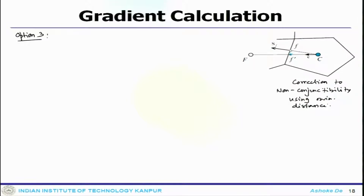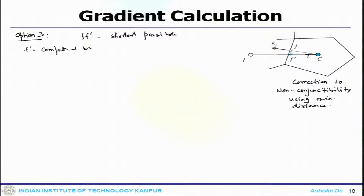In option 3, the position f prime is chosen such that the distance ff prime is the shortest possible distance in two dimensions. This leads to a more accurate computation of the gradient direction during the first iteration. f prime is computed by minimizing the distance between f and f prime — this is a minimum distance approach.